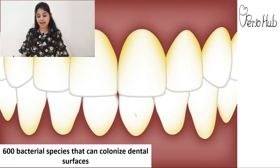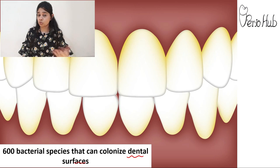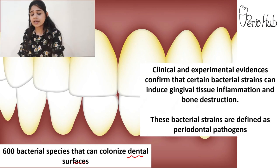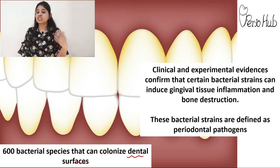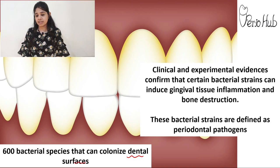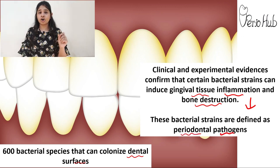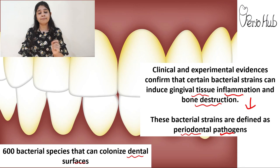There are about 600 bacterial species that can be colonized on the dental surfaces. Not all of these microorganisms are associated with the disease — the majority are commensals, meaning they are seen in healthy individuals as well. Only a small percentage of bacterial strains, identified through clinical and experimental evidence, are associated with gingival tissue inflammation and underlying bone destruction. These bacterial strains are termed periodontal pathogens.